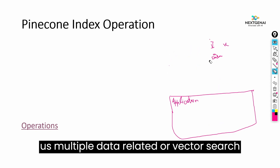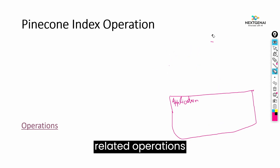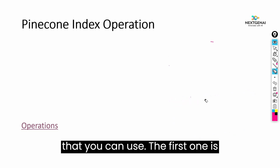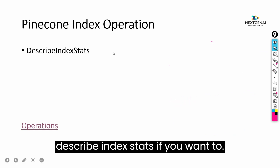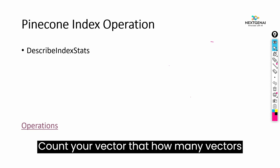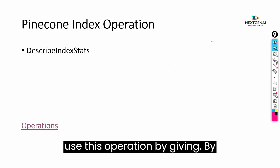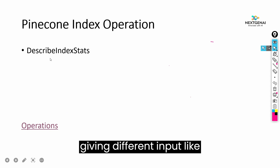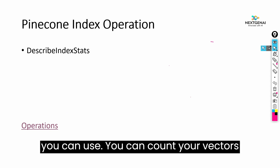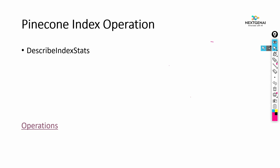The first operation is describe index stats. If you want to count your vectors — how many vectors are being stored in your index — you can use this operation. You can also count your vectors with respect to a specific namespace.